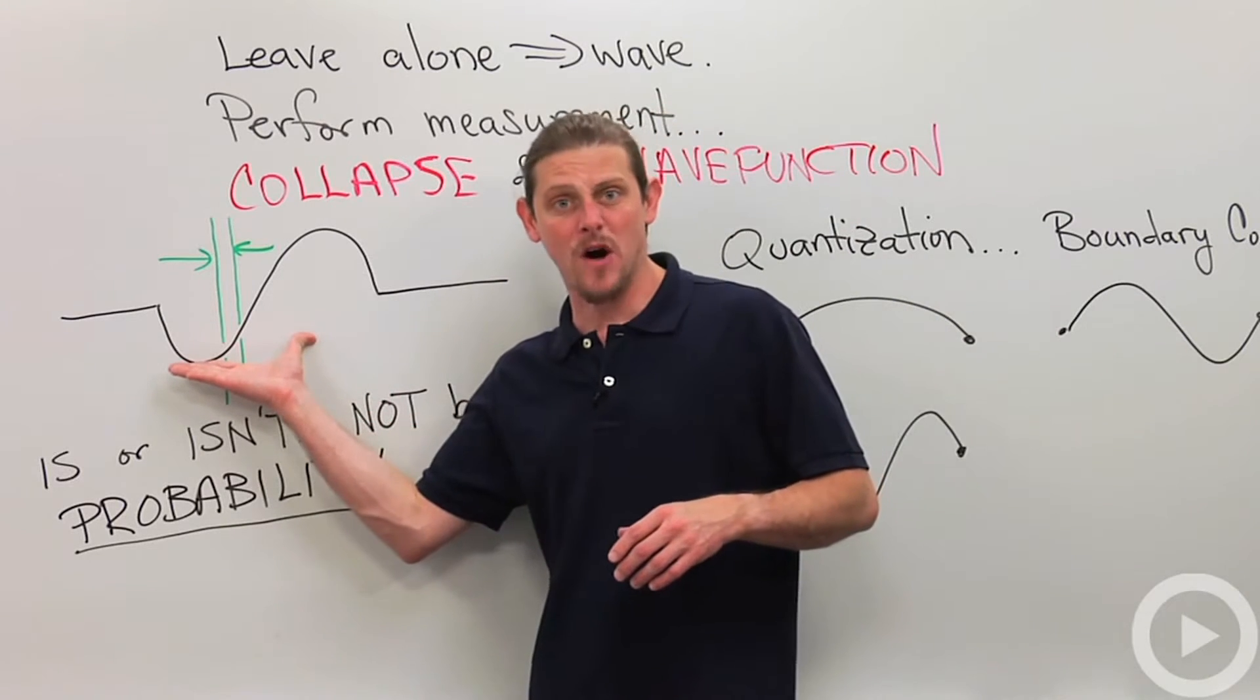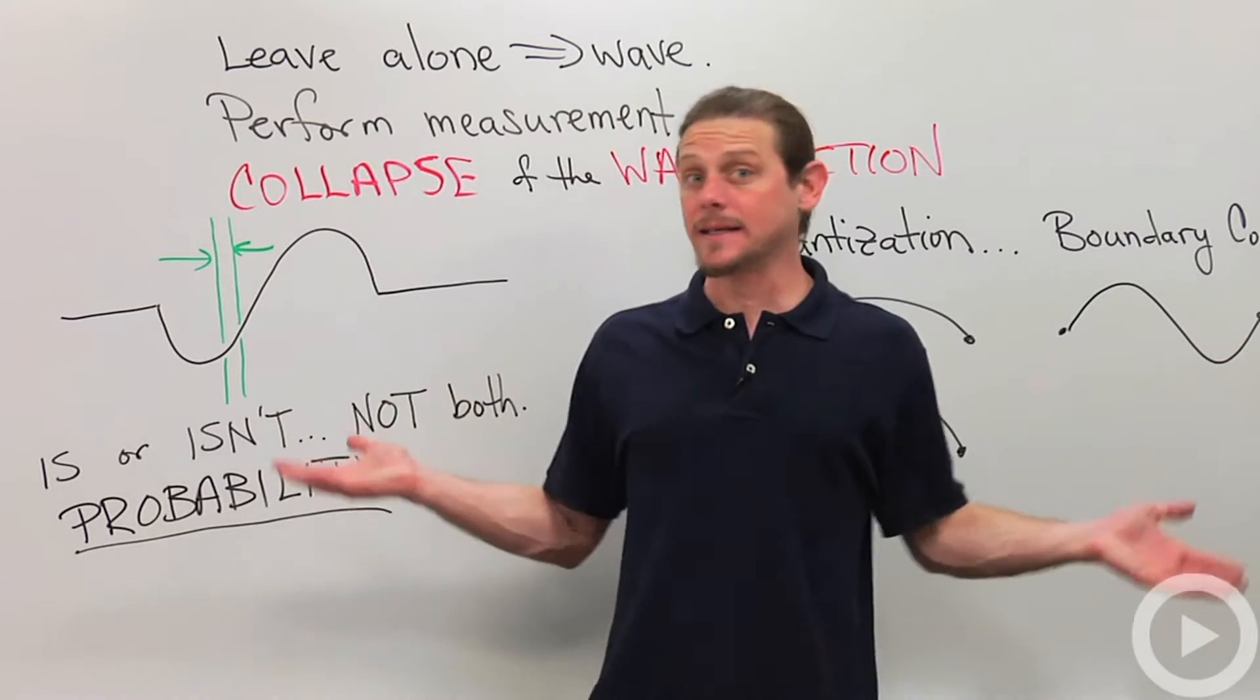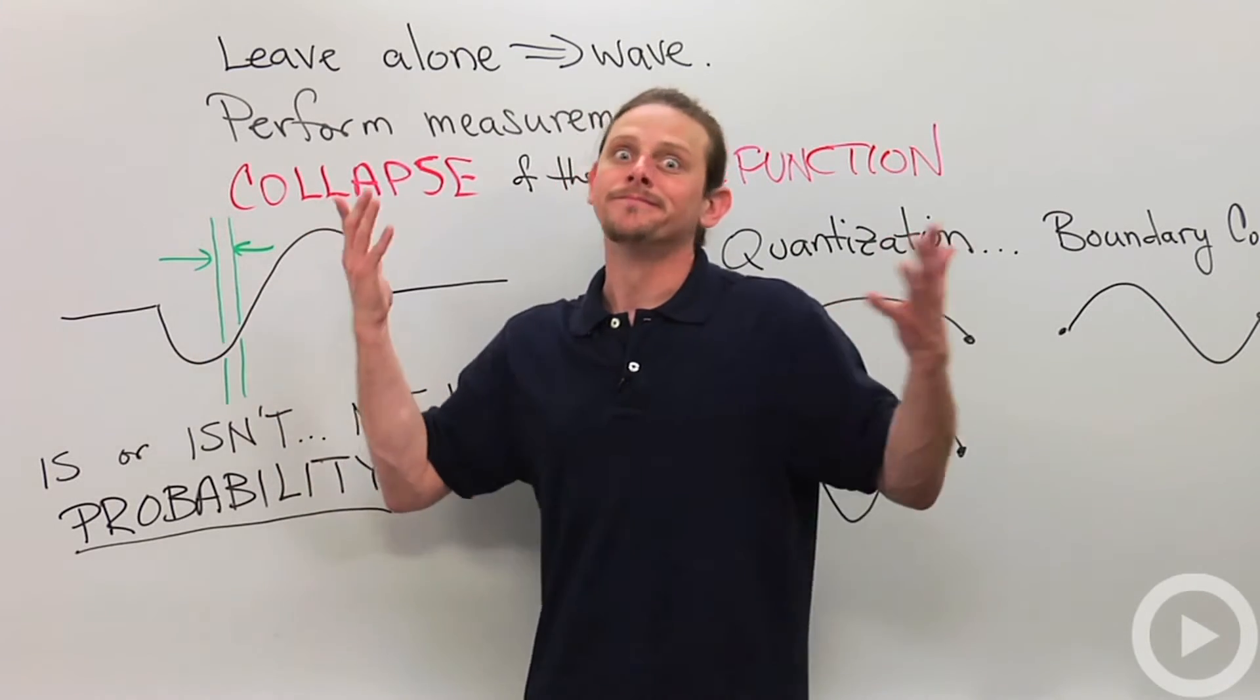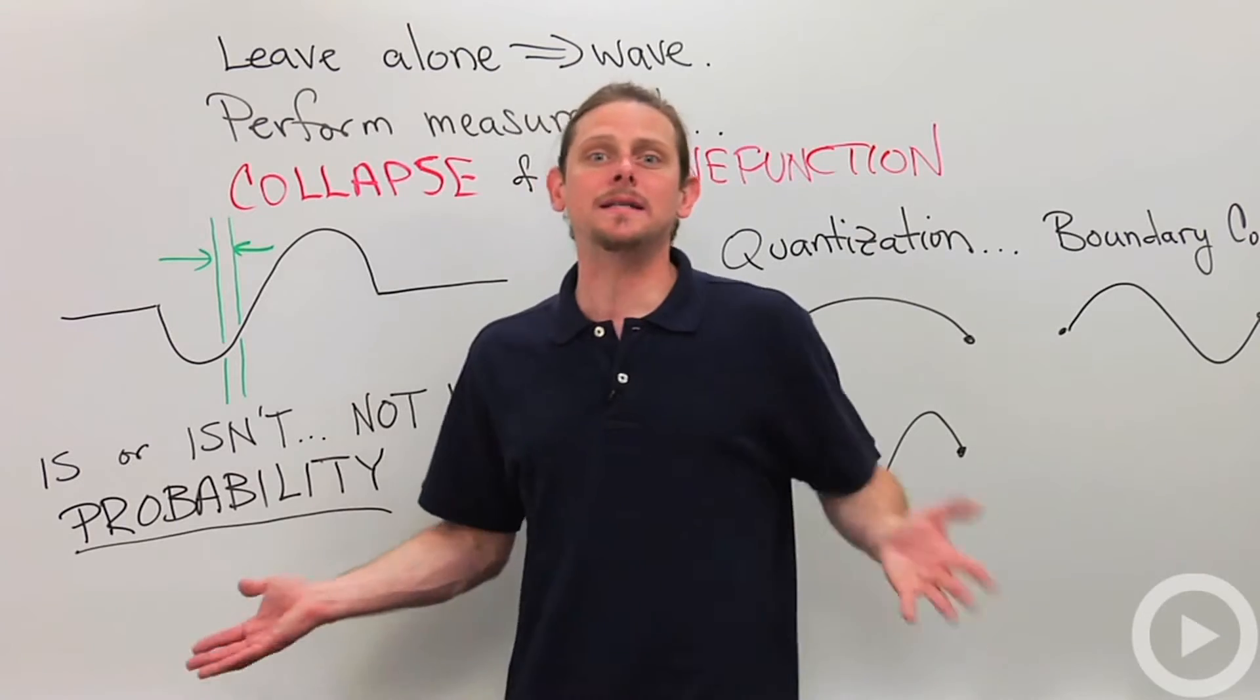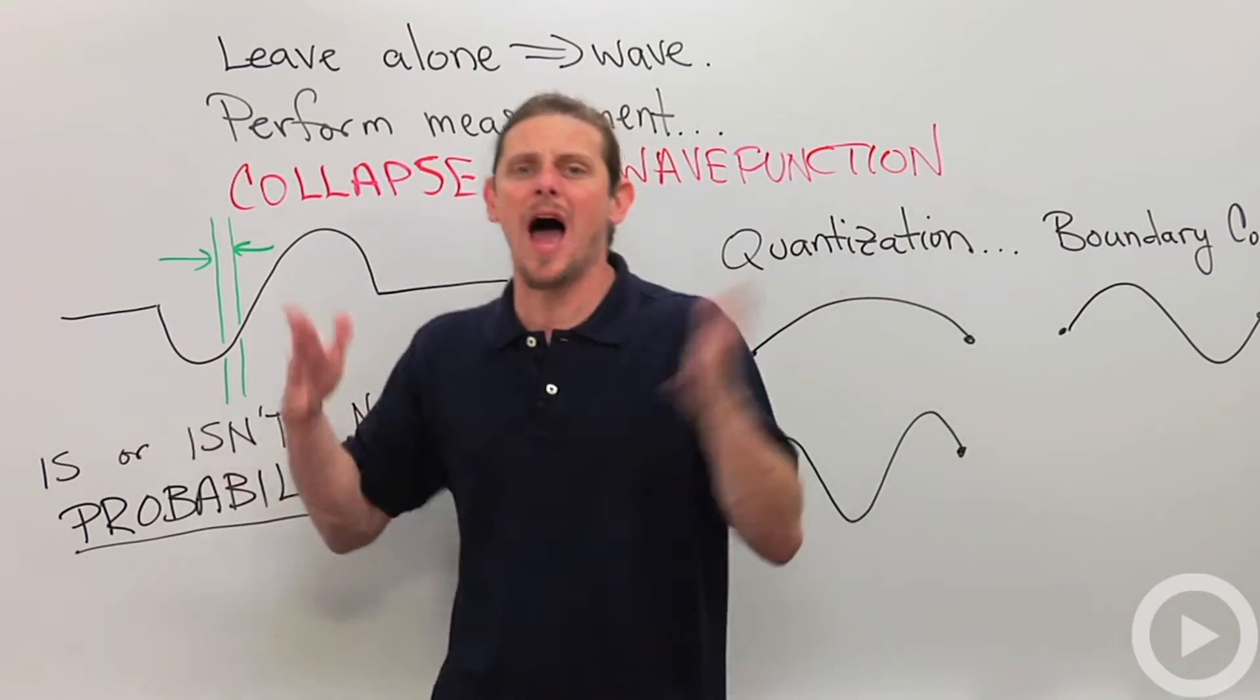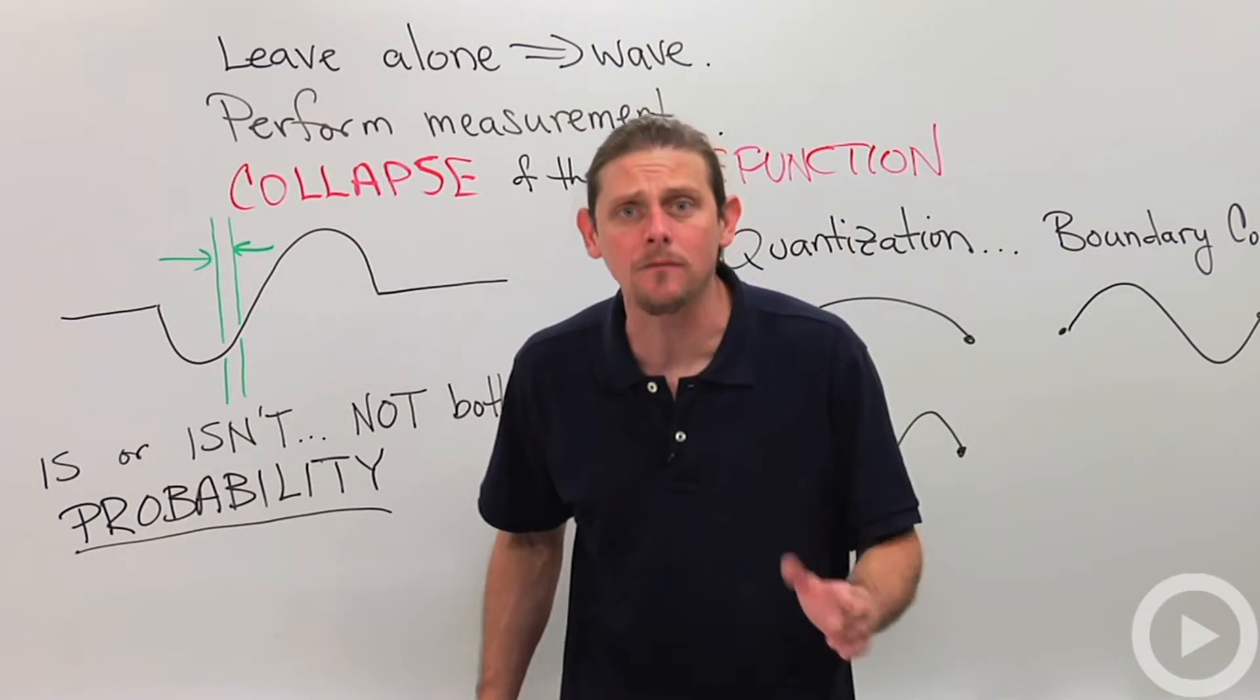So for example, if we've got a wave function that looks like that, and then we perform a measurement, and we say, is the particle between these two green lines? Well, I mean, we're performing a measurement. It either is or it isn't. So it doesn't get to say, oh, part of me is there, and part of... No, it doesn't get to say that. We're performing a measurement. We're asking, is it or is it not?